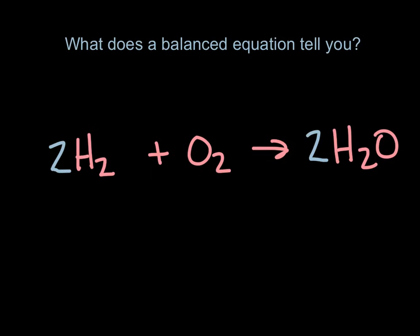So we're going to think of this as two moles of hydrogen react with one mole of oxygen to make two moles of water. It's really important that we get that mole ratio, and that ratio is going to stay the same every time this reaction happens. This is like a recipe saying that we always need two of these for every one of these to make two of these. Those ratios are very important to us in stoichiometry.